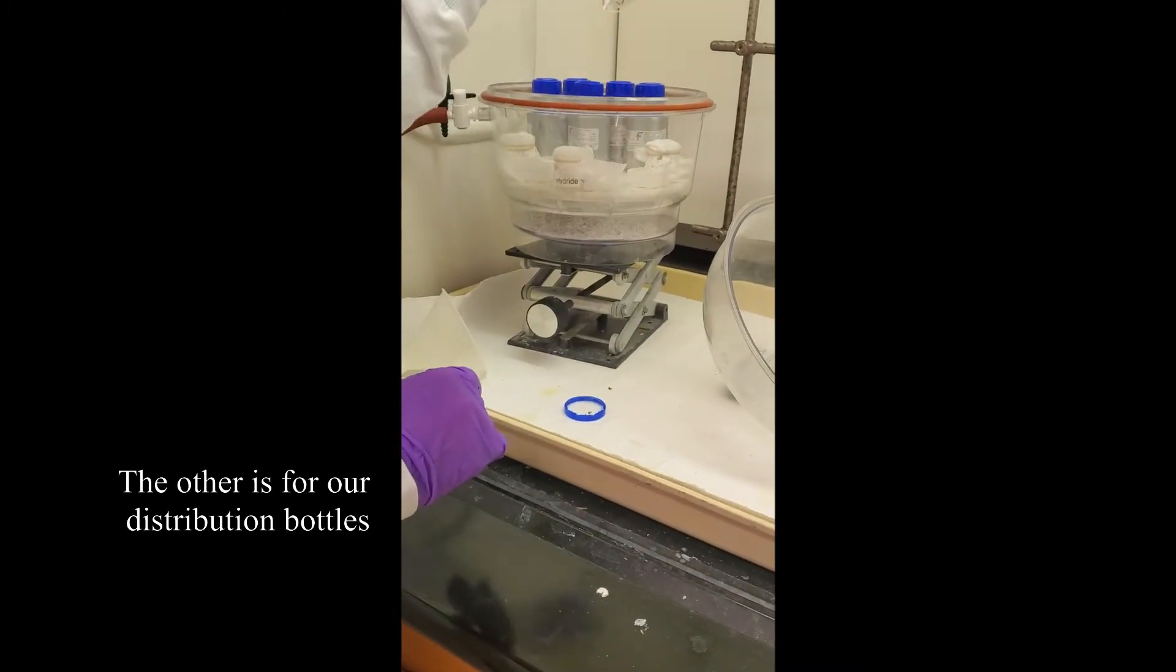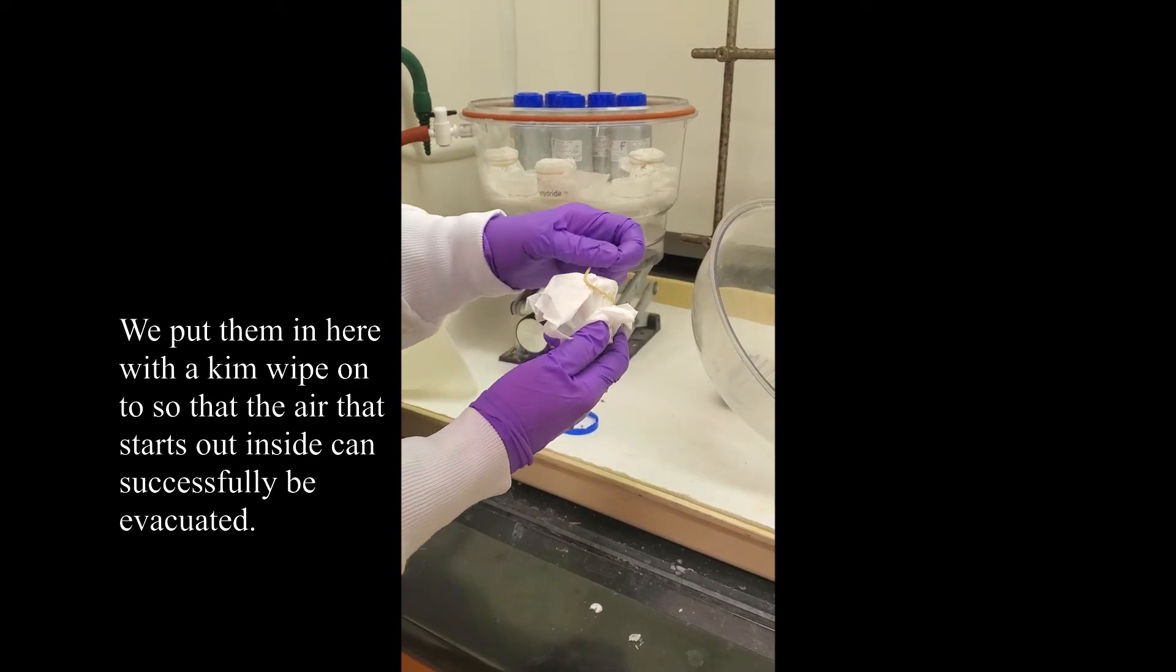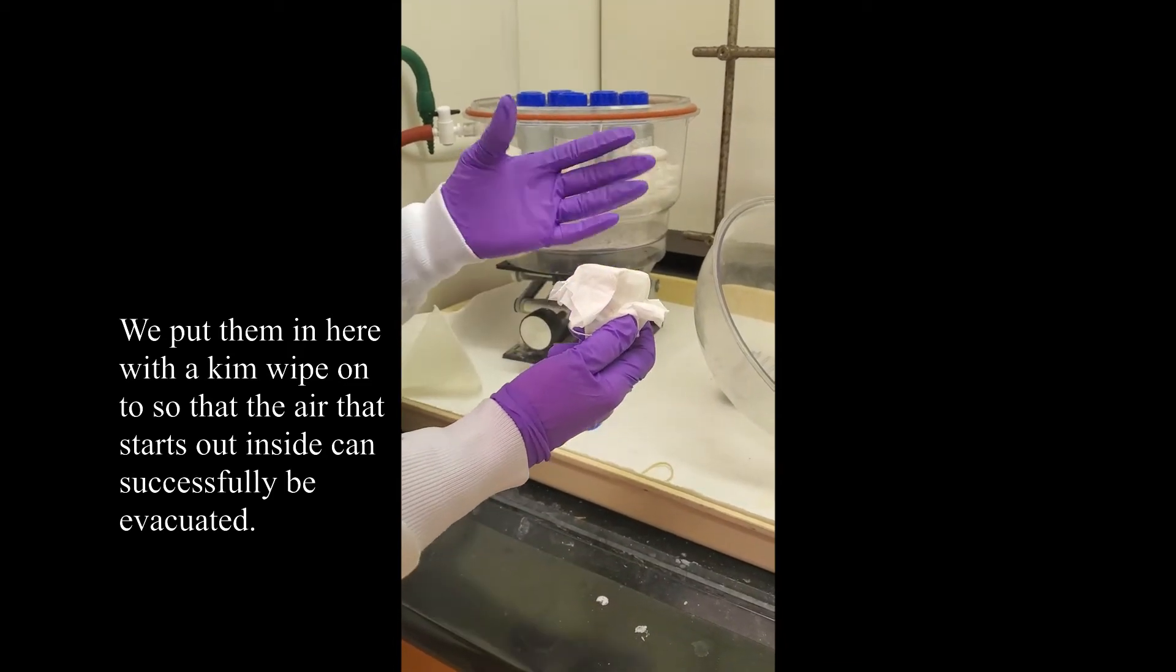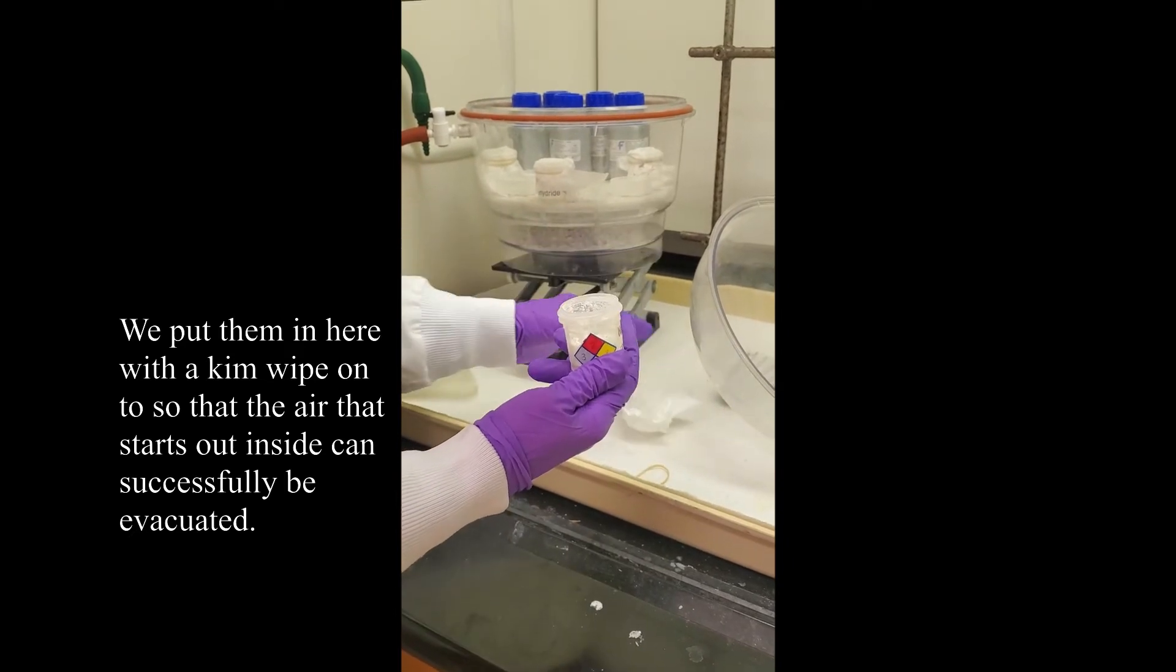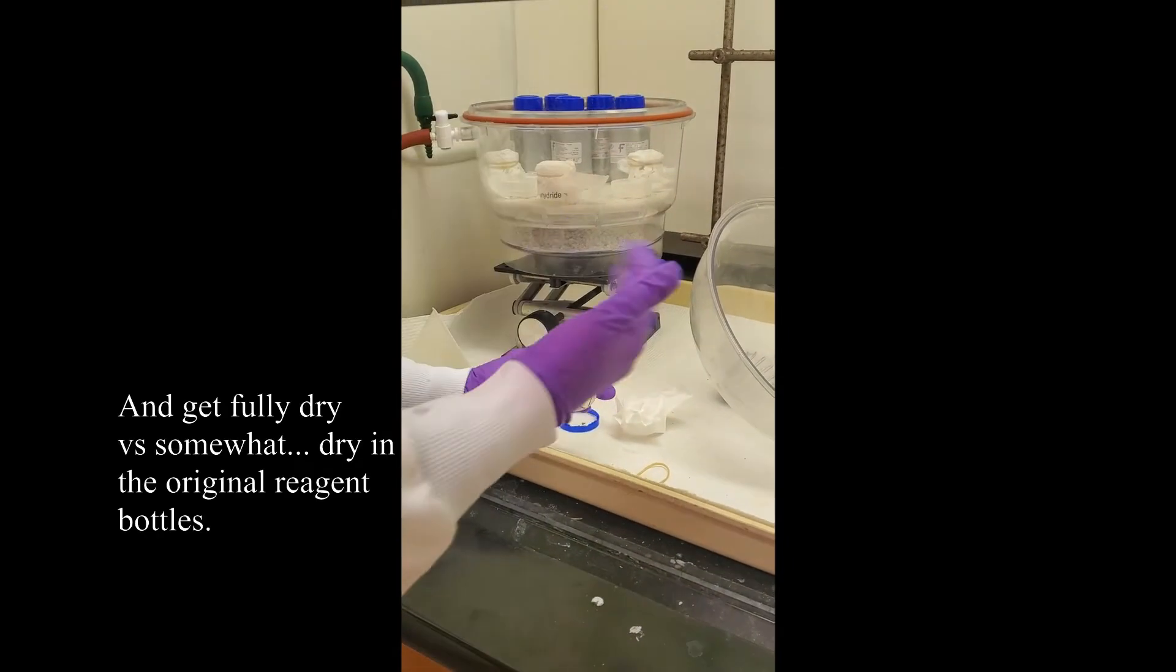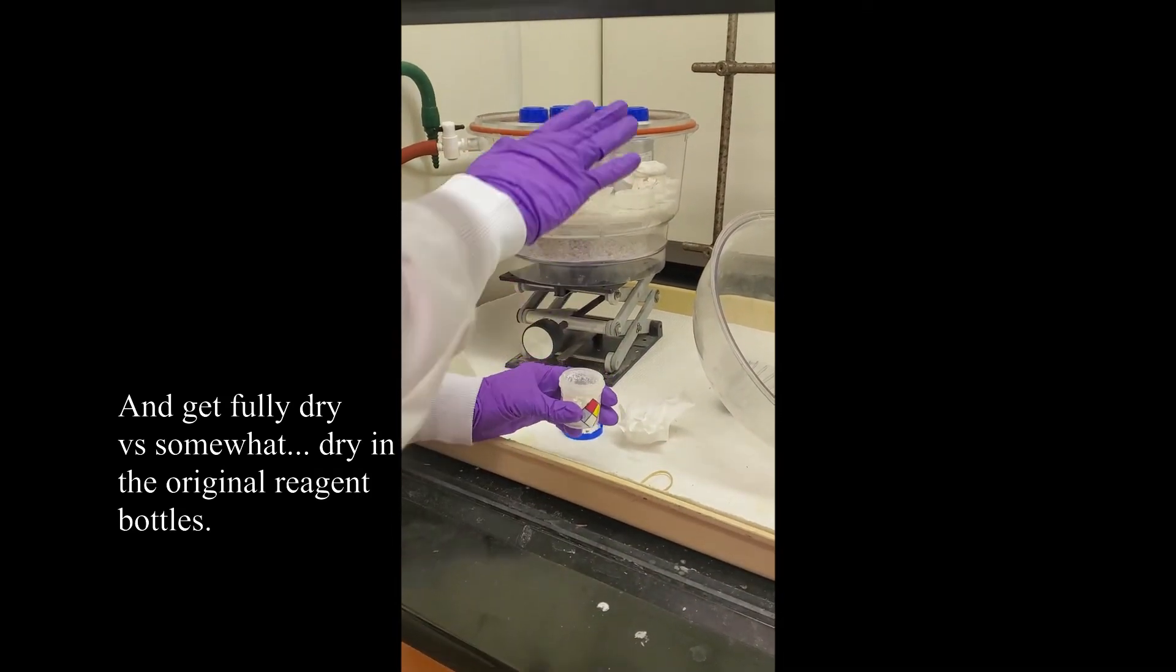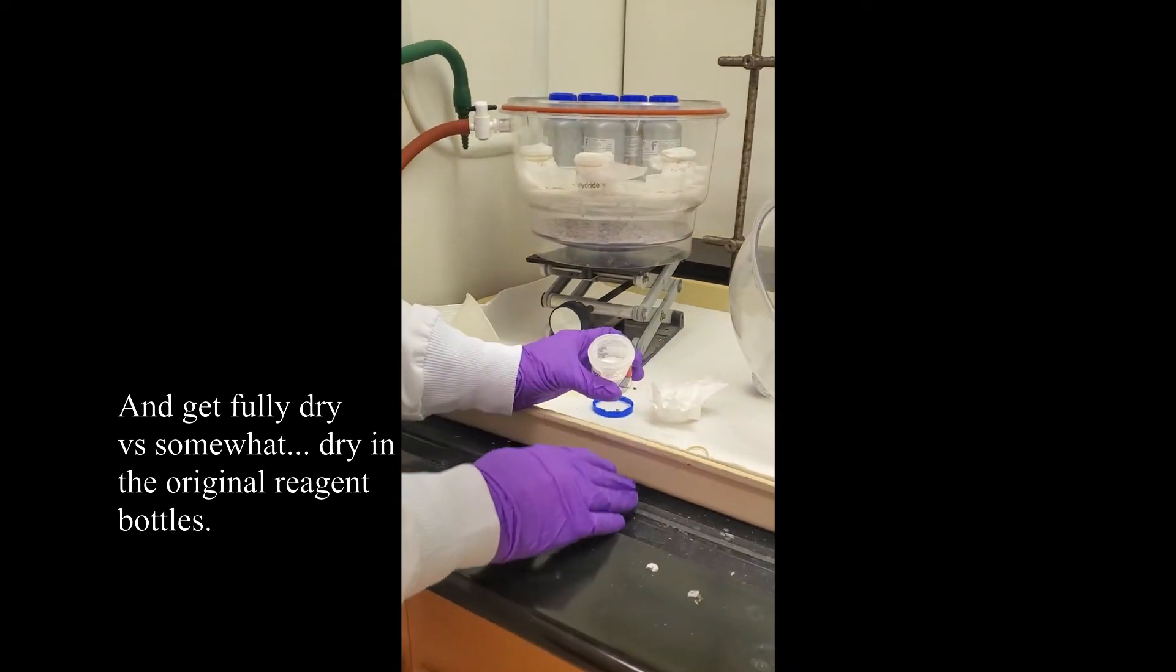The other is for our distribution bottles. We put them in here with the Kim Wipe on top so that the air that starts out inside can successfully be evacuated and get fully dry versus somewhat perhaps dry in the original reagent bottles.